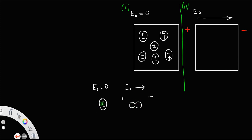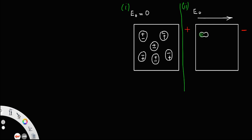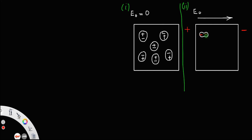That is, this same molecule will split — the negative charge comes closer to the positive plate, and the positive charge comes closer to the negative plate. So there is a displacement of these charges. Now the molecules will be arranged like this: negative charge on one side and positive charge on the other.